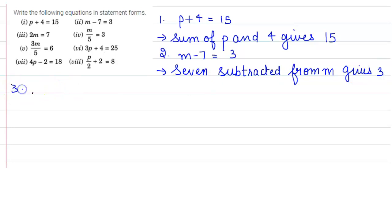Next third part is 2M is equals to 7. So this can be written as twice of M gives 7.